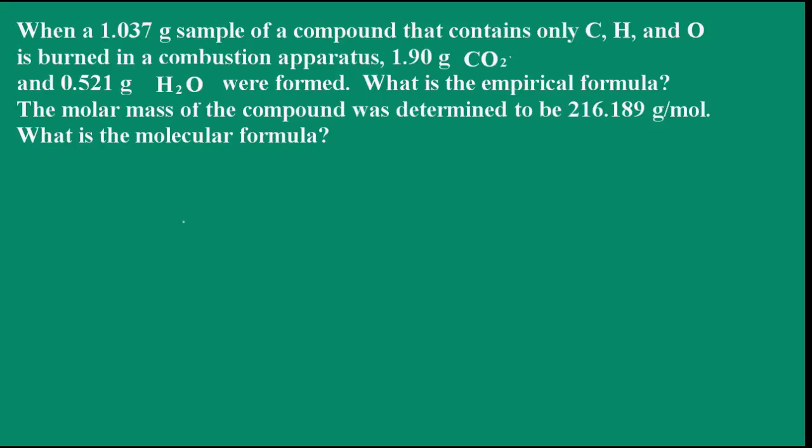Recall from General Chemistry 1 that when a compound is burned in a combustion apparatus, there are two absorbers. One absorbs the carbon dioxide that is produced and the other one absorbs the water. In this problem, we're told that we have 1.037 grams of a compound that contains only carbon, hydrogen, and oxygen. We assume complete combustion. The products of a combustion reaction are carbon dioxide and water.